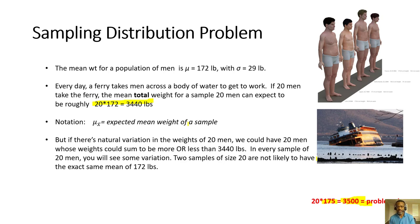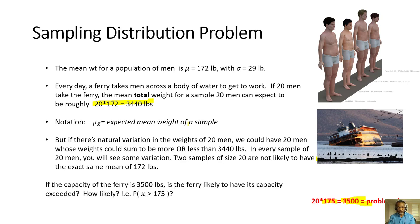There is natural variation in the weights of 20 men. Sometimes it'll be 3,500, 3,460, 3,300, or 3,490 — every sample of 20 men can expect some variation, and no two samples of size 20 are likely to have the exact same mean of 172 pounds. If the capacity of the ferry is 3,500 pounds, the real question is: what's the probability of taking a sample of 20 men and finding their average weight is greater than 175?